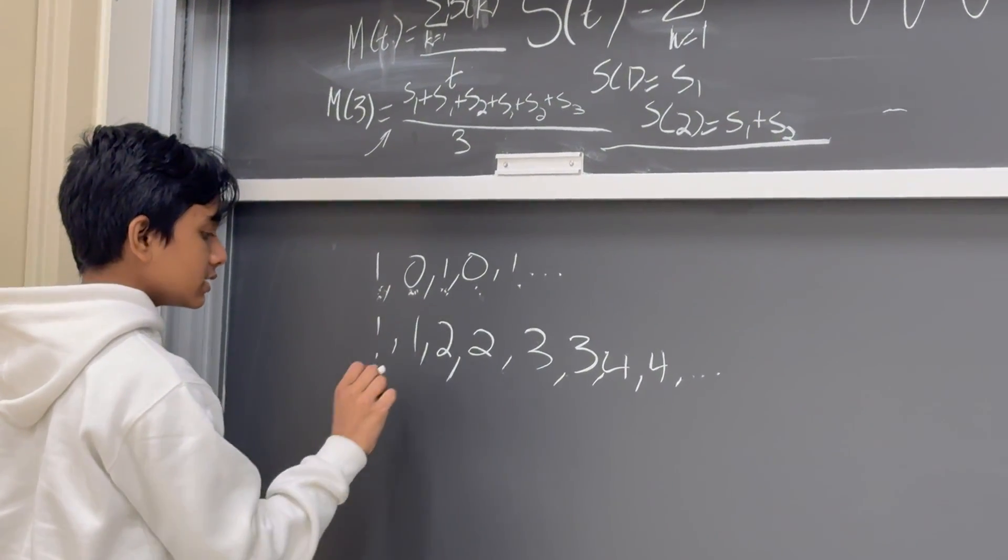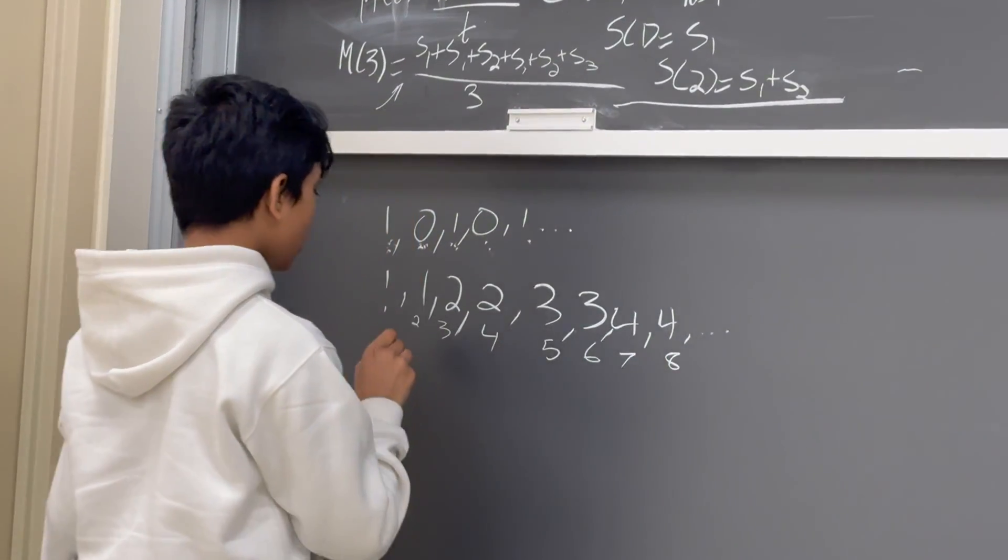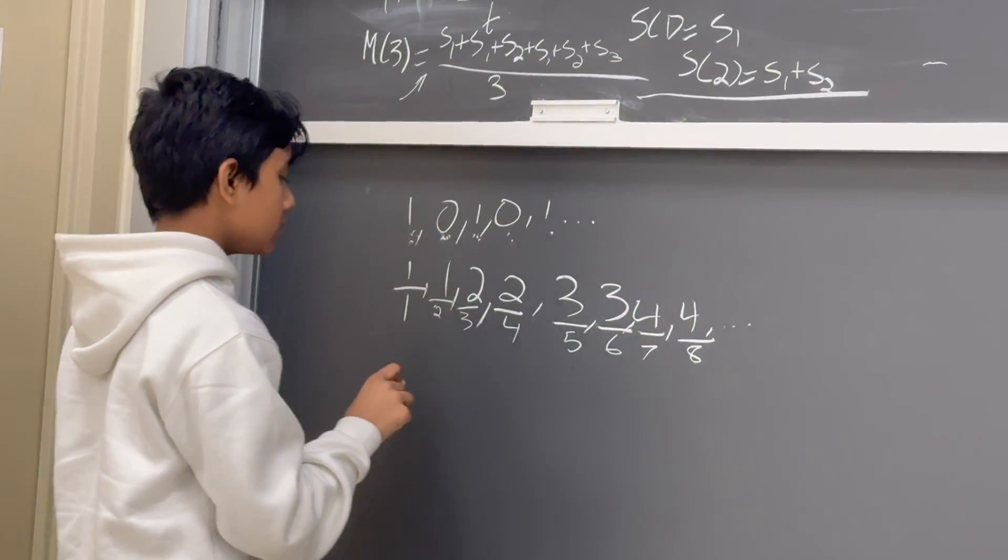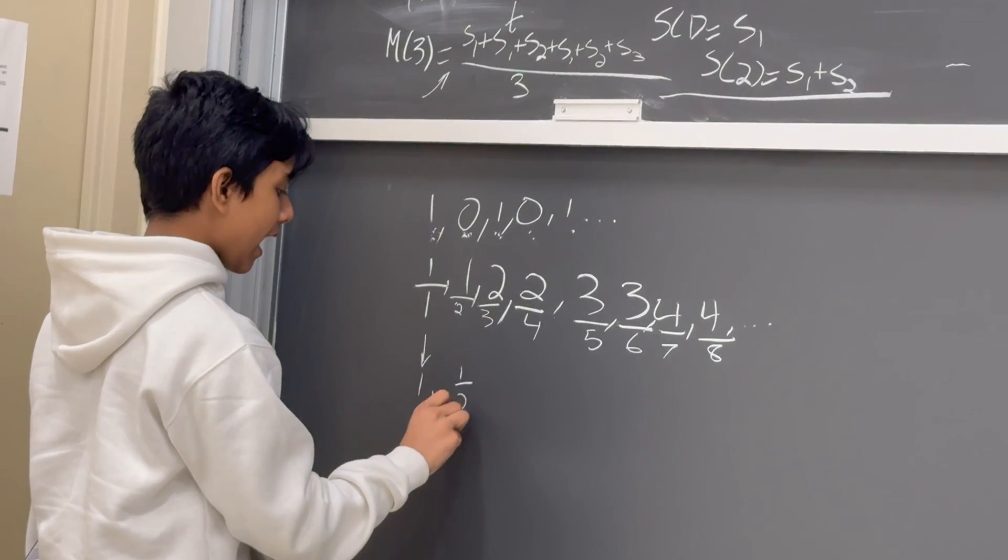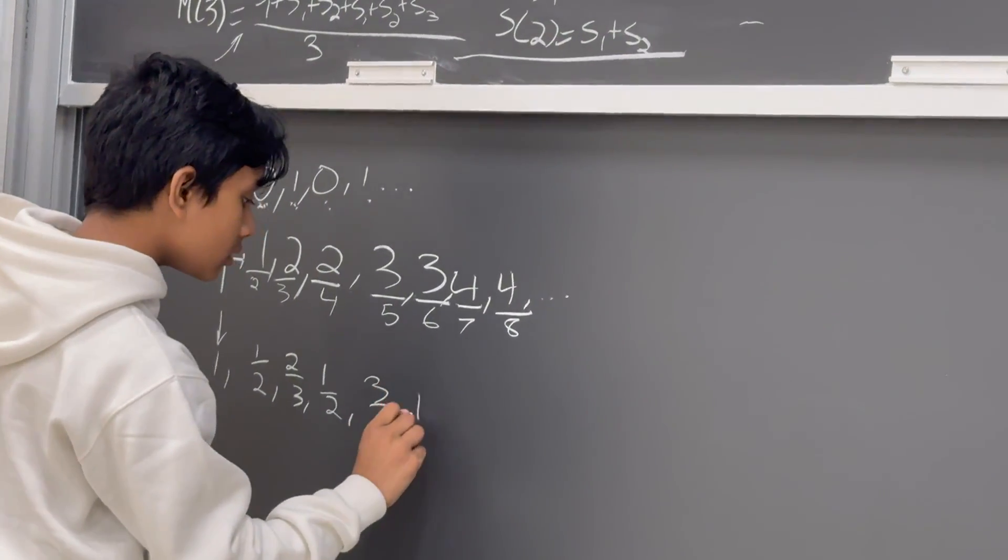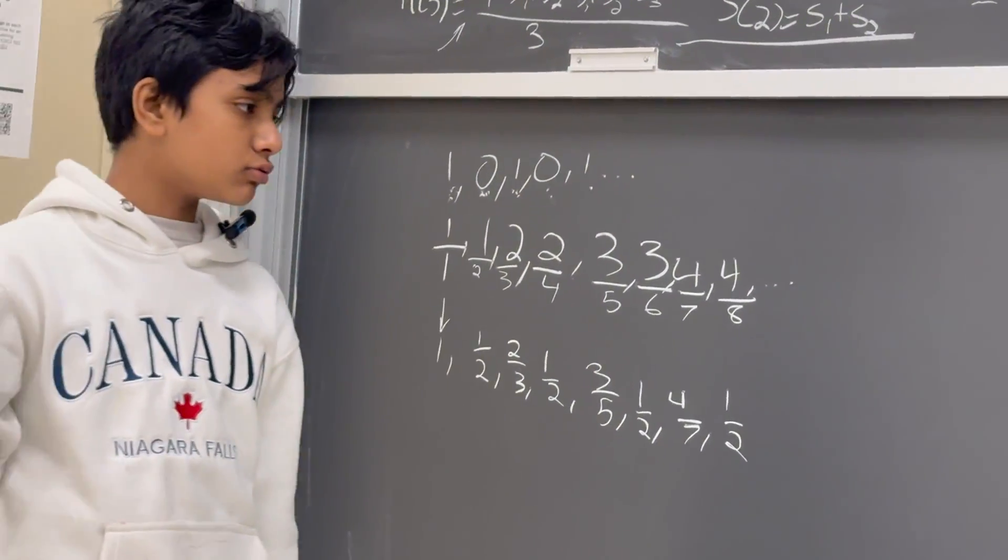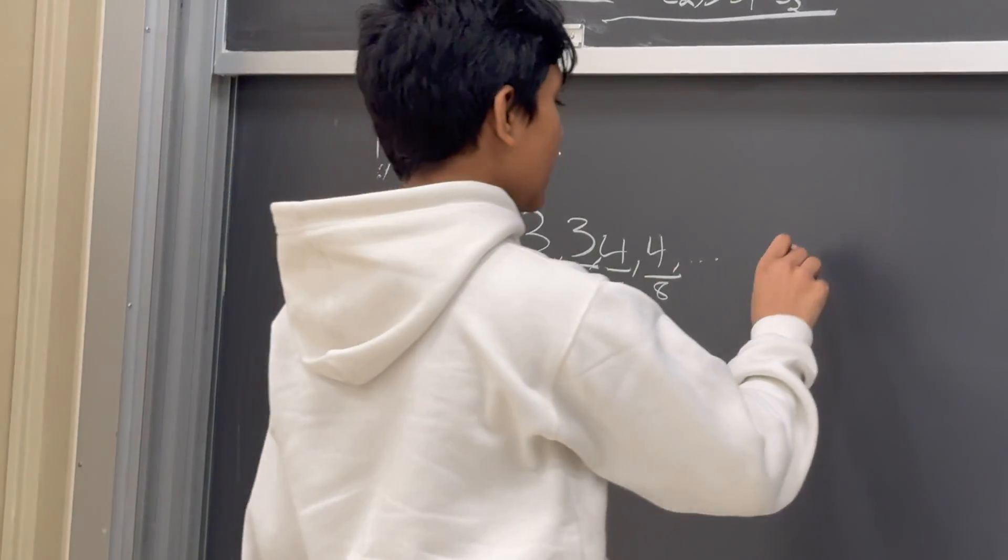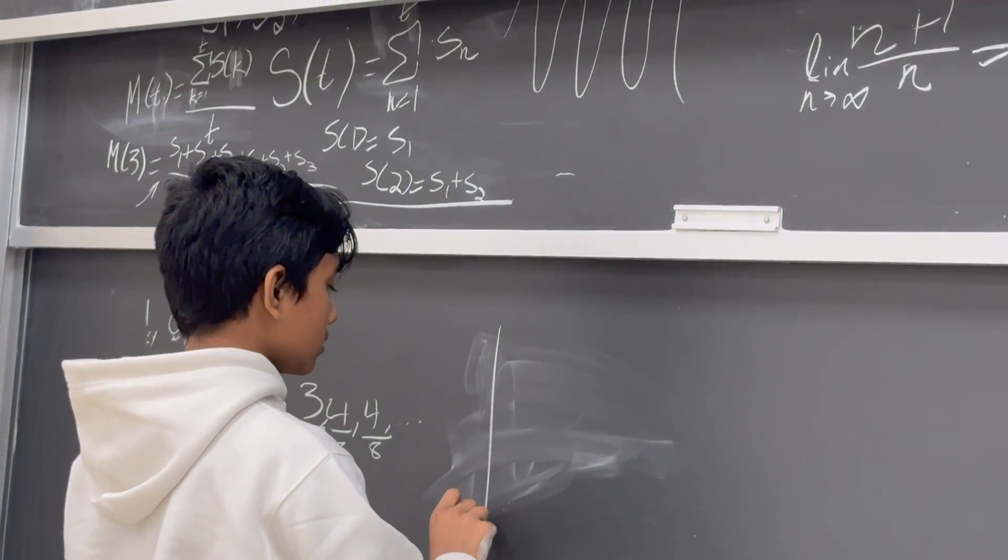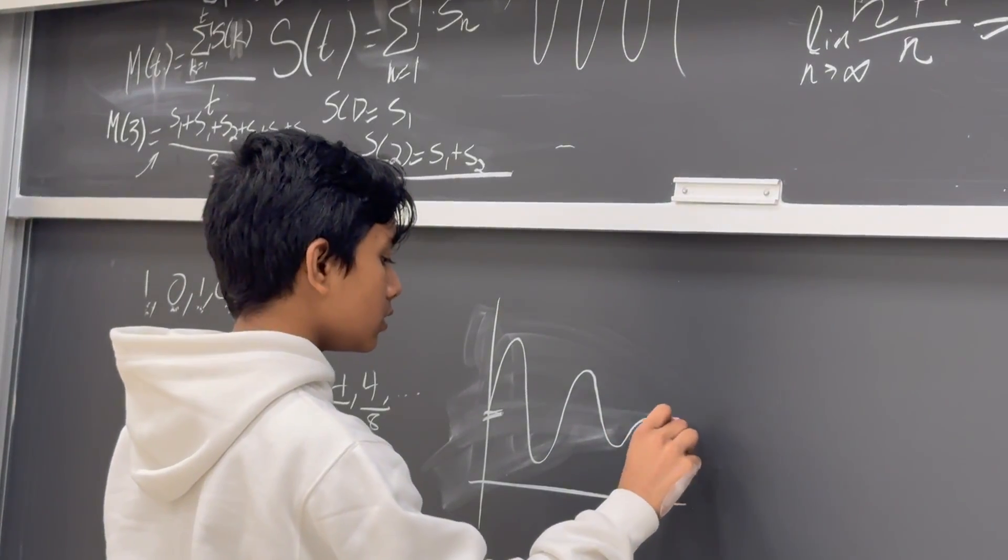Now, let's divide them by their term in the sequence. This is 1, 2, 3, 4, 5, 6, 7, 8, and so on. Notice anything? 1, 1/2, 2/3, 1/2 again, 3/5, 1/2 again, 4/7, 1/2 again. But the difference this time is it's not just randomly swapping between different values. It's actually getting closer and closer to 1/2.